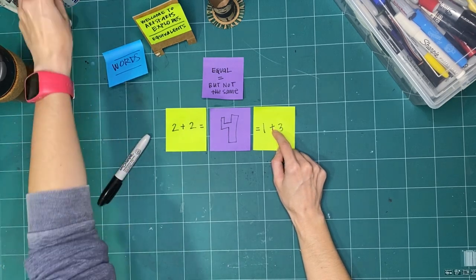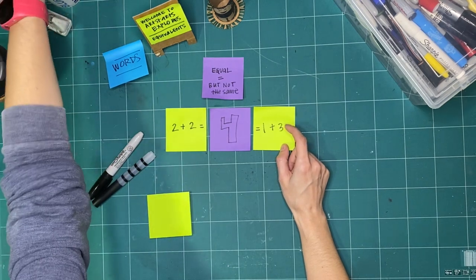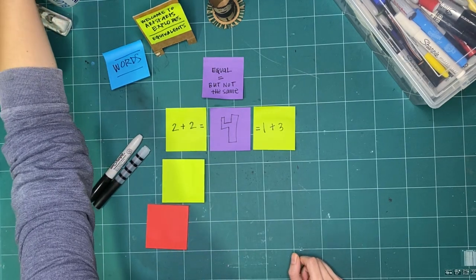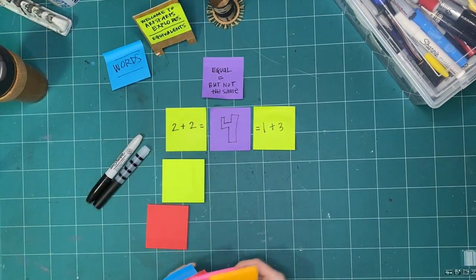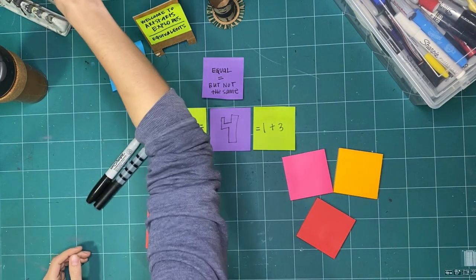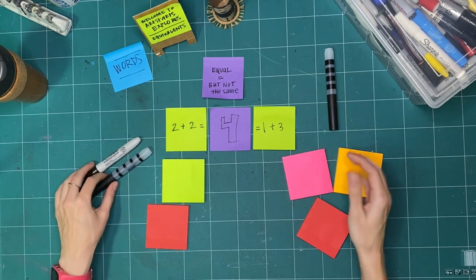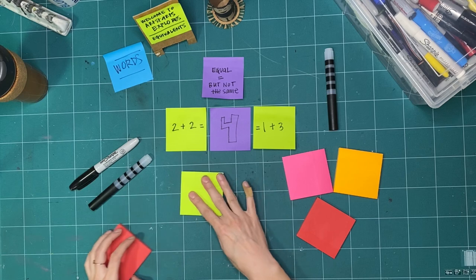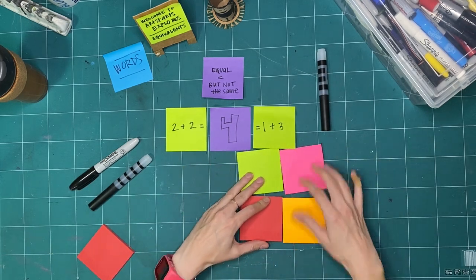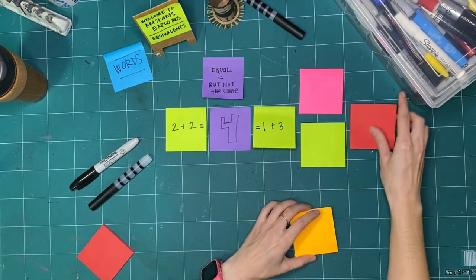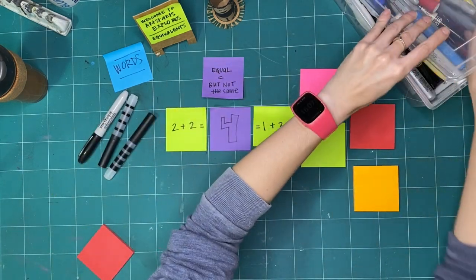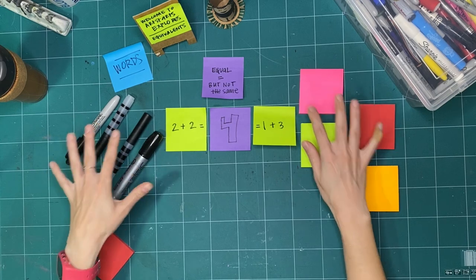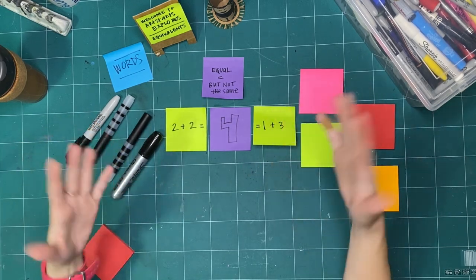So for example, if I had two pens and two sticky pads. If I have three sticky pads and one pen, I'm using the same things and they equal four, but they're not the same. Even this four of the sticky pads is not the same as this four of the pens. So they're equal in number, in quantity, but they're not the same. And that's what we're exploring in art making.